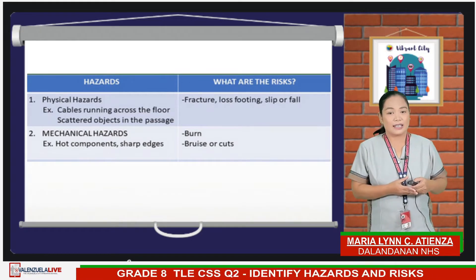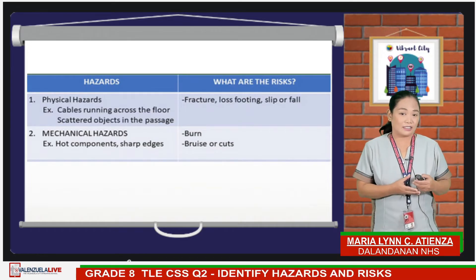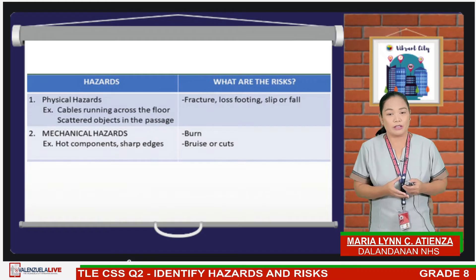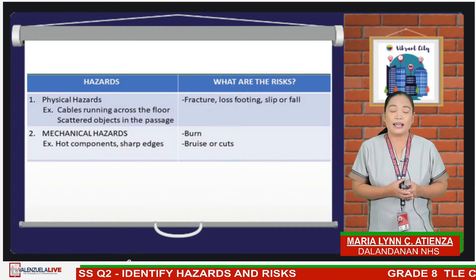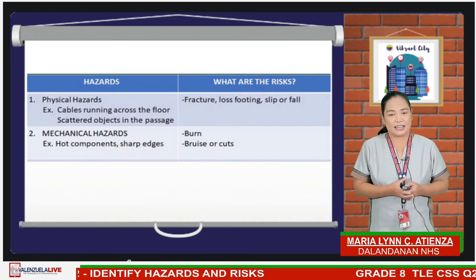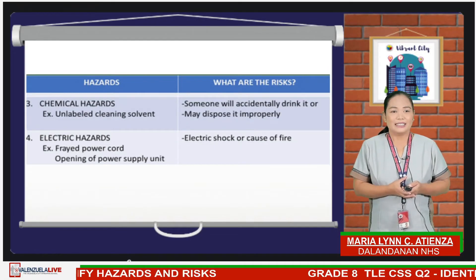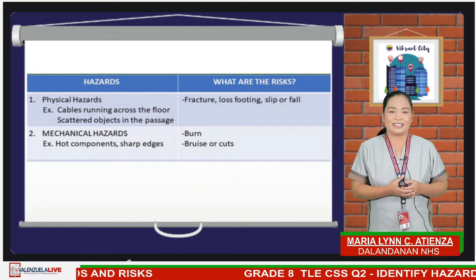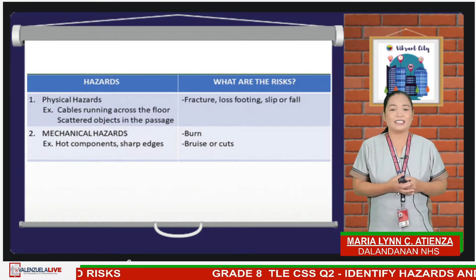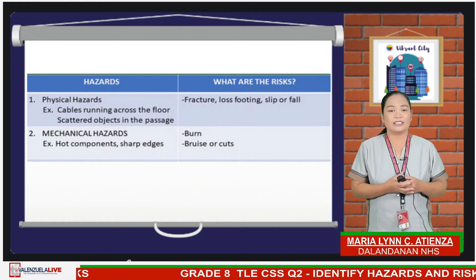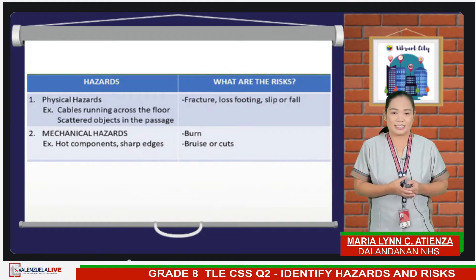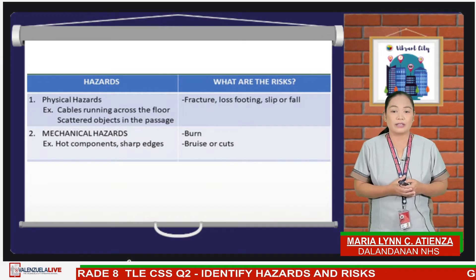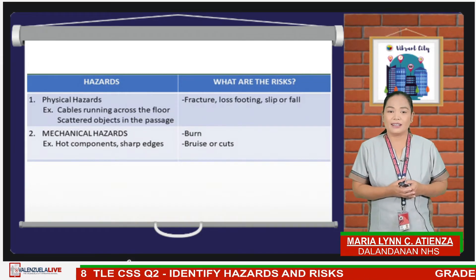Physical hazards are circumstances that can cause harm with contact. Examples are cables running across the floor and scattered objects in the passage. Mechanical hazards involve any hazards involving machines or industrial processes. Examples are hot components and sharp edges. The possible risks are burns, bruises, or cuts.